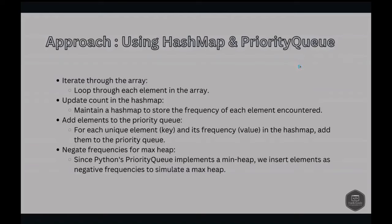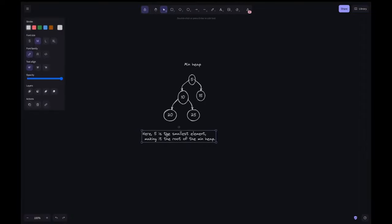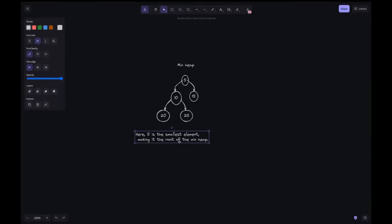Next approach: using a hash map and priority queue. To optimize, we first use a hash map to count frequencies of each element, then use a priority queue or min heap in Python to keep track of the top k elements. A priority queue stores elements such that the highest or lowest priority element is always at the front. Python's priority queue implements a min heap — a binary tree-based data structure where the parent node's value is always less than or equal to its children, and the root contains the smallest element.